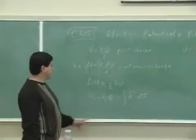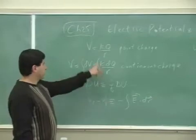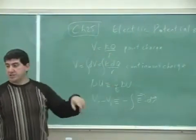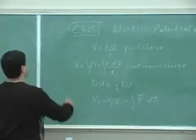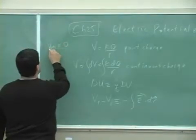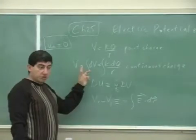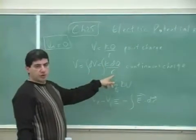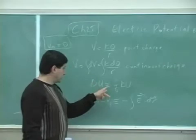We found that the potential of a single point charge is equal to kq over r. The potential at infinity is defined to be 0 by definition. And if we want to find the potential of a continuous charge distribution, we need to integrate k dq over r. We also defined potential energy as q times delta V.